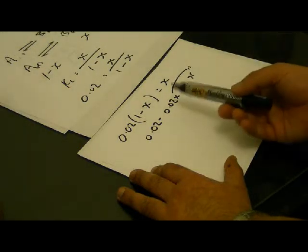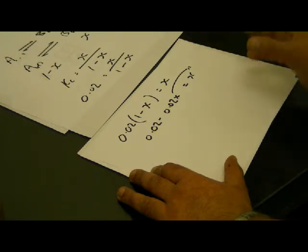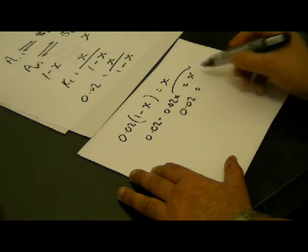Algebra being to balance. Either add 0.02X on this side to get rid of it. I must add 0.02X to that side. So 0.02 equals X add 0.02X.